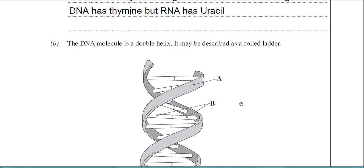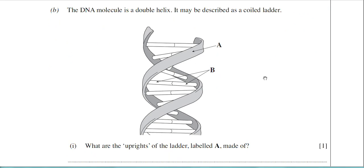Moving quickly on then to part B, we've got a nice diagram there of the double helix of DNA. The coiled structure, helical structure. There's parts A and B labeled there.